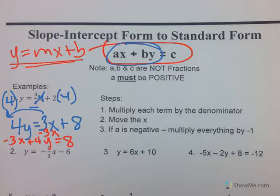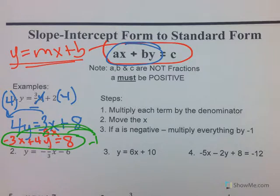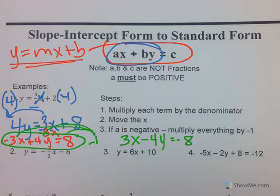If a is negative, multiply everything by negative one. So we take negative three x plus four y equals eight and multiply by negative one. That makes it where the first number is not negative anymore — so you get positive three x minus four y equals negative eight. It's okay to have a negative for b and c, as long as the first number is not negative.